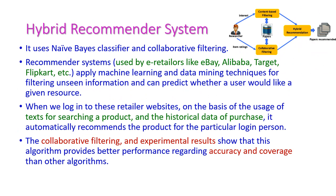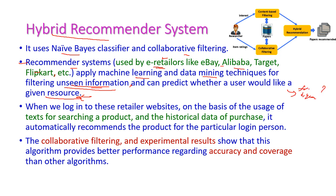Another popular application of Naive Bayes classifier, along with collaborative filtering, is the hybrid recommender system. This recommender system is used by retailers like eBay, Alibaba, Target, Flipkart, Amazon, and even YouTube. They apply machine learning and data mining techniques to filter unseen information, which is used to predict whether the user will like a particular item or not.